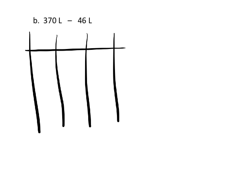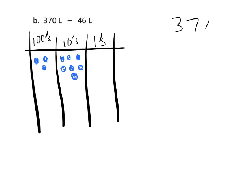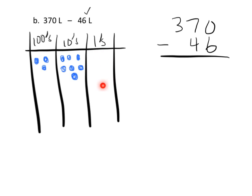For this problem we're going to begin with a place value chart, with ones, tens, and hundreds columns. We're going to model 370—there's the 300 and 1, 2, 3, 4, 5, 6, 7, so there's our 370. Now the problem says we're supposed to subtract 46, so we need to do 370 minus 46. Subtracting 6, but right now we don't have any ones to subtract 6 from.